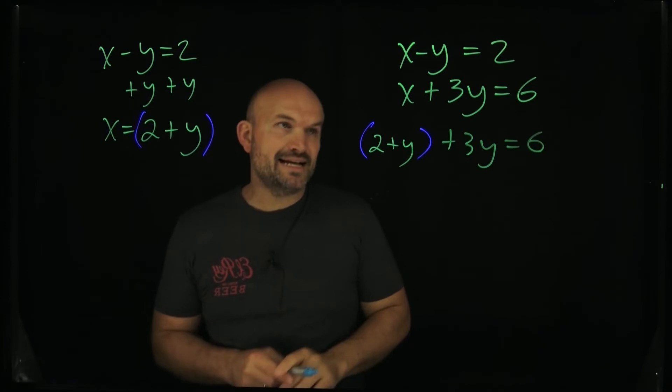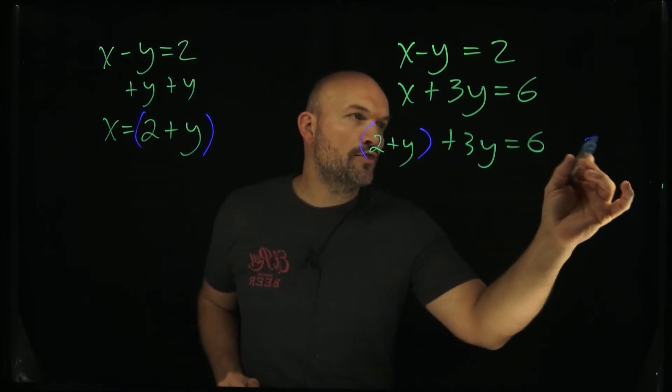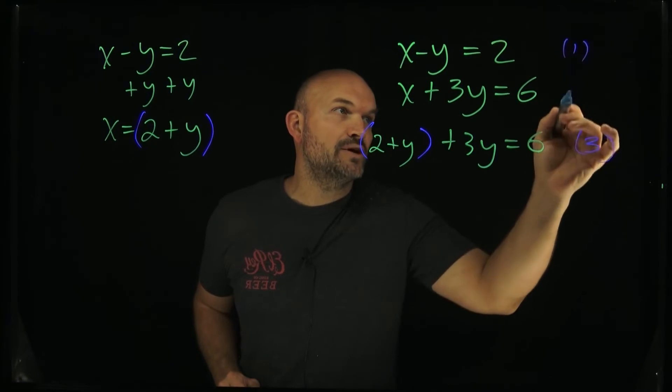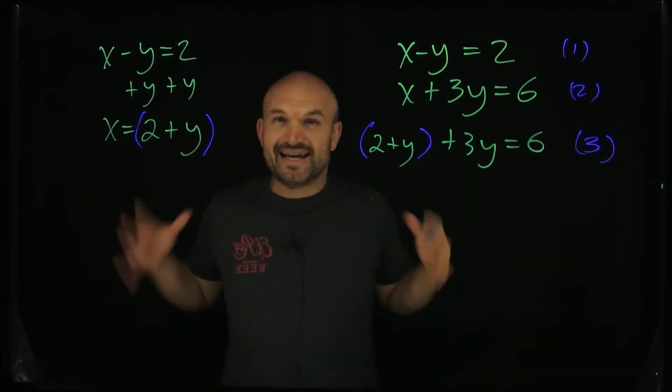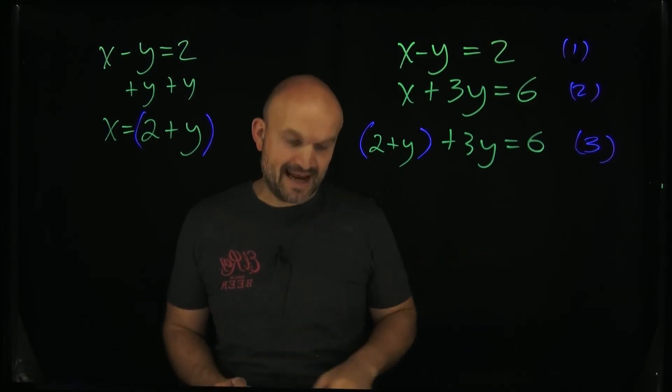Okay, so now what I want you to be able to understand is taking the top equation and plugging into the second equation, I've now created this third equation. If we're gonna say this is equation 1, this is equation 2, now I'm taking this third equation that only has y's. Now I can combine my like terms and go ahead and solve for y.